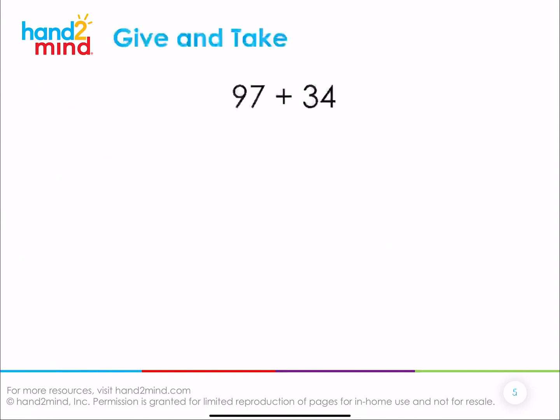So what we're going to do is we're just going to summarize what we've talked about today, what you just experienced. So the idea here is that you are learning about a strategy called give and take. I want you to picture those eggs in your mind and what just happened. So let's talk about how you can use give and take for the problem 97 plus 34.